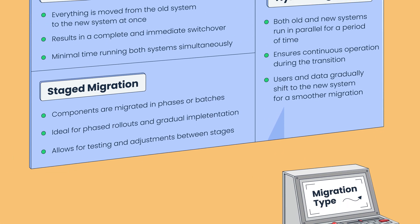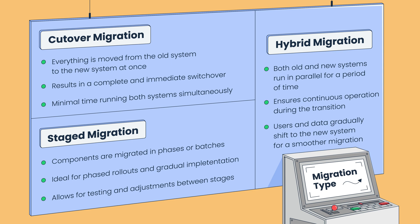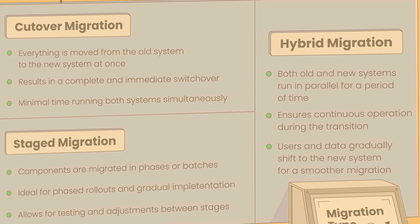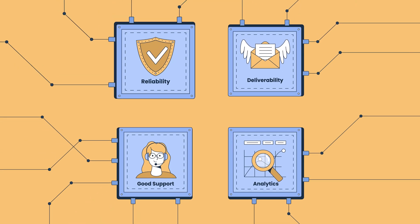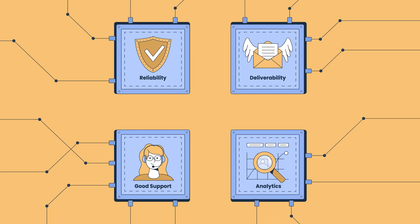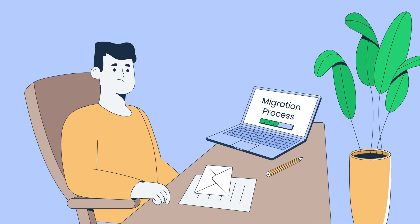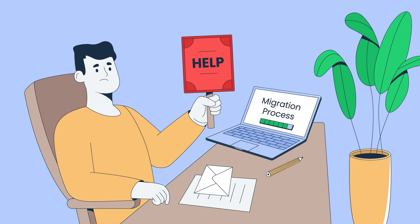Depending on your needs, for the migration type you can choose a cut-over migration where everything's moved at once, a staged migration which is ideal for phased rollouts, or a hybrid migration which keeps both old and new systems running in parallel. As for picking the provider, prioritize reliability, deliverability, good support, and analytics. And if you think you'll need assistance during the migration process, then you should also add that to the list of infrastructure provider must-haves.